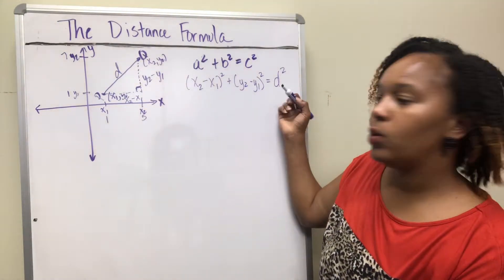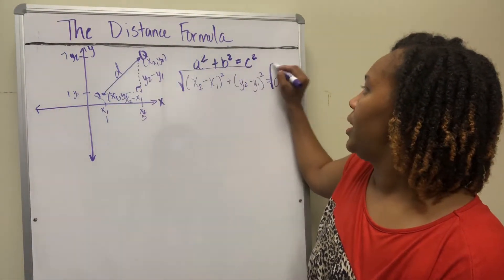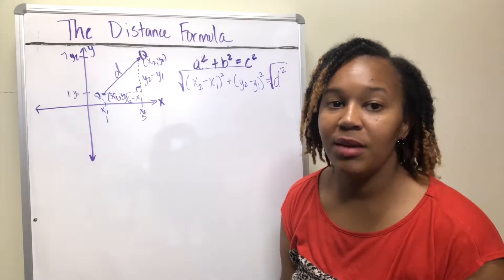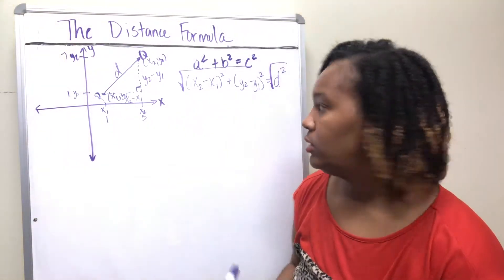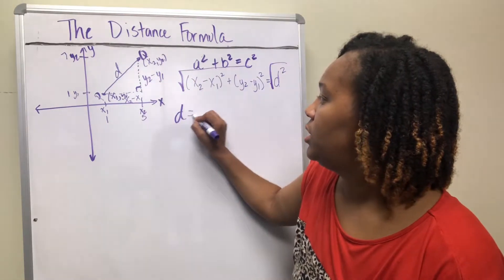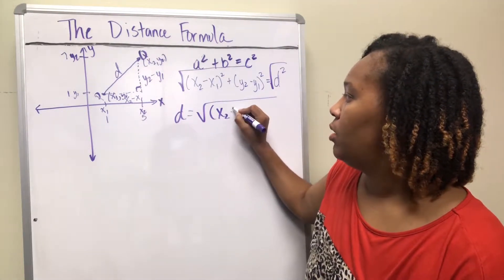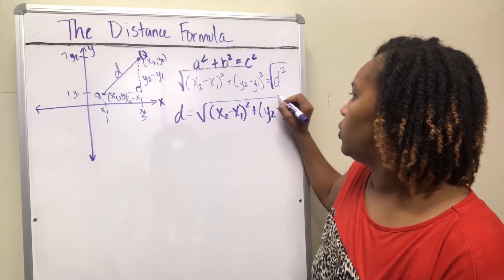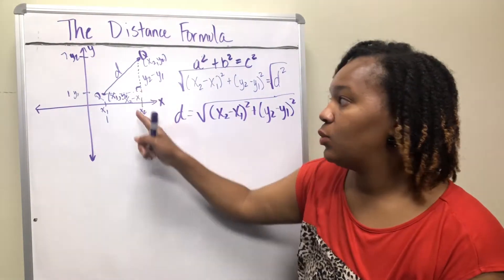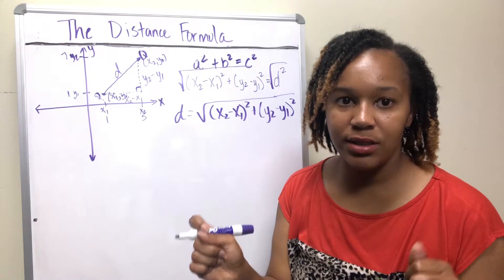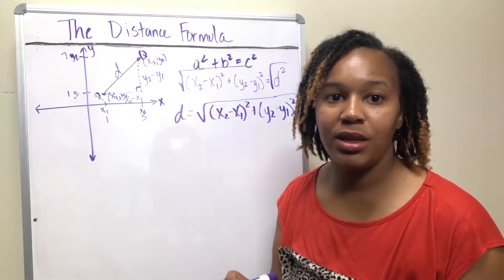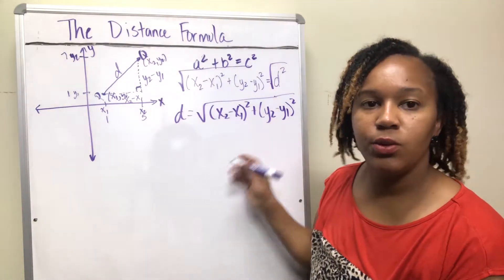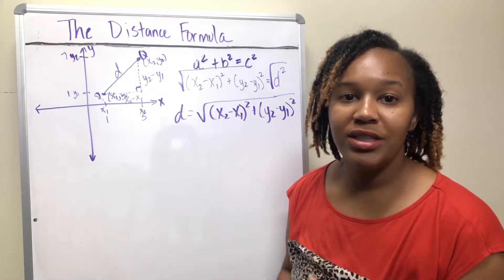To solve for d, we take the square root of both sides. Since distance can't be negative, we ignore the negative root. That gives us the distance formula: d = √[(x2 − x1)² + (y2 − y1)²]. That's where it comes from — create a right triangle with the line segment as the hypotenuse, take the differences in x and y, square them, add them, and take the square root.